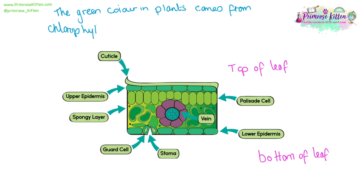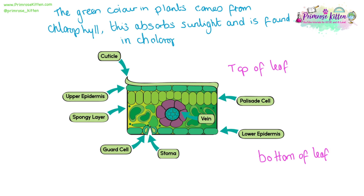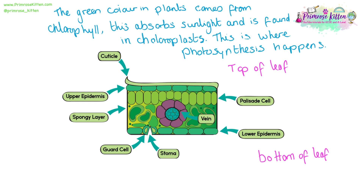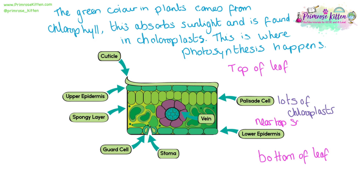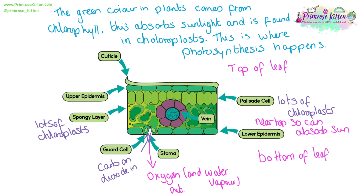The green colour in plants comes from chlorophyll. This is the pigment that absorbs sunlight and is found in chloroplasts — this is where photosynthesis happens. Palisade cells will have lots of chloroplasts and they are near the top so they can easily absorb sunlight. The spongy mesophyll layer will also have lots of chloroplasts. The stoma, the opening on the bottom, will allow carbon dioxide in, and water vapour can diffuse out of this gap as needed.